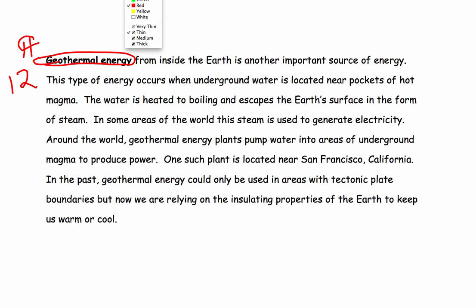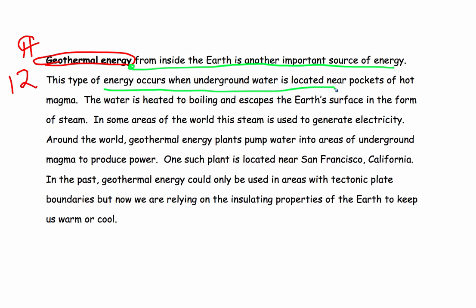So what is geothermal energy? Geothermal energy is energy that comes from inside the Earth. This type of energy occurs when underground water is located near pockets of hot magma. Basically, this is water heated up that comes from underground and either escapes through geysers or is channeled into power plants that use the boiling water and steam to turn turbines.